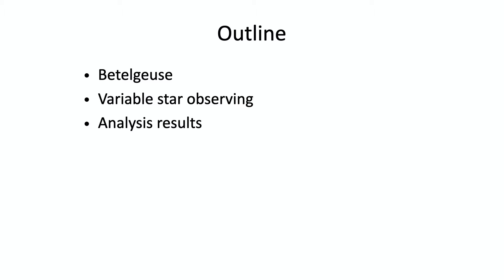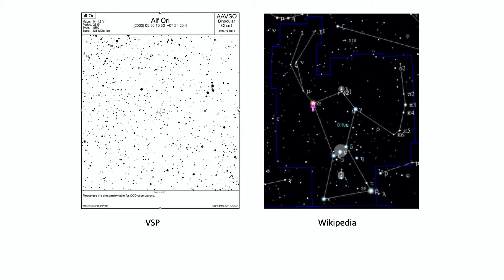Probably I don't need to tell you where Betelgeuse is or how to find it — you probably don't even need a star chart or an app. Most people know where it is. I should explain that there are finder charts, as they're called, available that you can print out from the AAVSO for Betelgeuse or any other variable star, with various stars marked with different magnitudes.